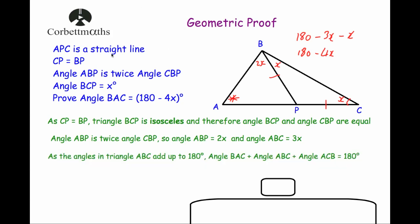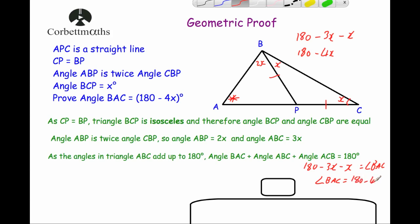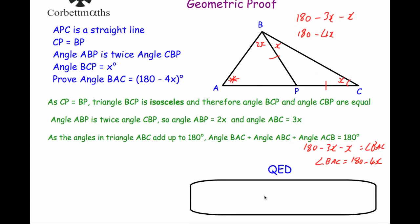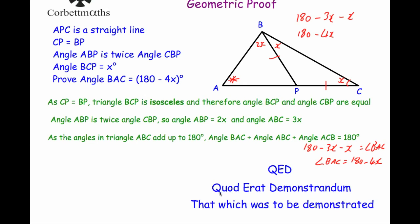Our last step — I would write down: as the angles in a triangle add up to 180 degrees, angle BAC plus angle ABC plus angle ACB equals 180 degrees, and therefore 180 degrees minus 3x minus x equals angle BAC, so angle BAC equals 180 degrees minus 4x. At the end of proof questions I like to write QED — that's an abbreviation of the Latin phrase 'quod erat demonstrandum', meaning 'that which had to be demonstrated'. So whenever you're asked to prove something, I quite smugly write QED at the end to show that I'm done.